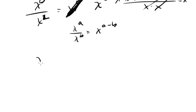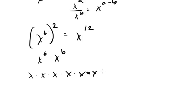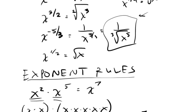The last rule is powers. If you have x to the 6th all raised to the 2nd power, you just multiply the exponents, so this is x to the 12th. Why? Because x to the 6th squared is x to the 6th times x to the 6th, giving you 6 plus 6, which is 12 x's. The general formula is: x to the a, all raised to the b, equals x to the a times b. Those are the exponent rules you need to know for the SAT.